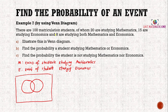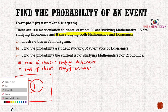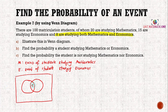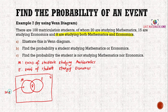When drawing a Venn diagram, always label your intersection first. Eight students are studying both mathematics and economics, so we label the middle as 8. This is event M, this is event E, and S is the sample space. It says 20 are studying mathematics — we already have 8 in the intersection — so we write 20 minus 8, which is 12, inside the M circle. That means 12 students study only mathematics and not economics.